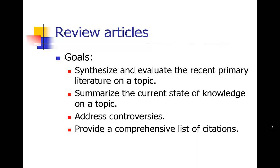So what's the goal of a review article? Basically, the idea is you're trying to synthesize the recent primary literature on a topic. There's a huge proliferation of papers these days and nobody can really keep up with the entire primary literature. So your job as a review article author is to put together and summarize the recent primary literature so that somebody can go to your paper and get a good sense of the field. You're also summarizing the current state of knowledge — what do we know, what do we not know, where are we?